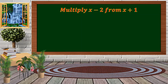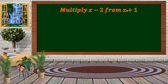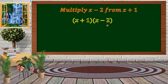Now, how about if we multiply x minus 2 from x plus 1? Remember that "from" means we're going to have x plus 1 times x minus 2.